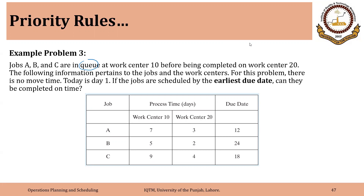Job A, B, and C are in Q at work center 10 before being completed on work center 20. So in this case we are having two work centers. In the previous example we had one work center; in this case we are having two.